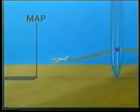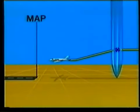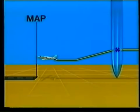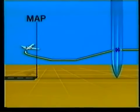When a missed approach procedure calls for a turn, it's important to understand that the obstruction clearance criteria are figured from the missed approach point. If you begin a missed approach prior to the MAP, you may pull up and begin a climb, but you may not begin the turn until you have reached the missed approach point.